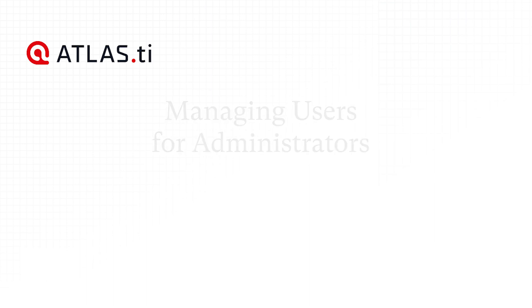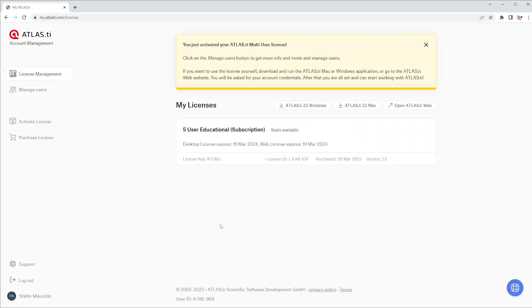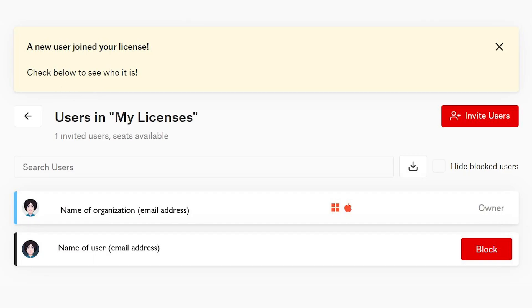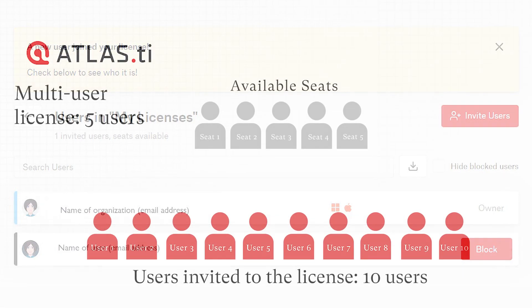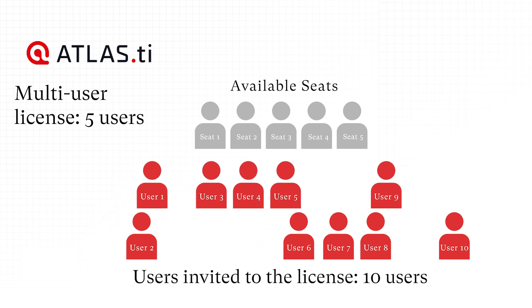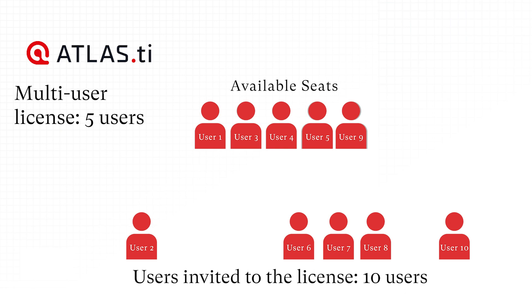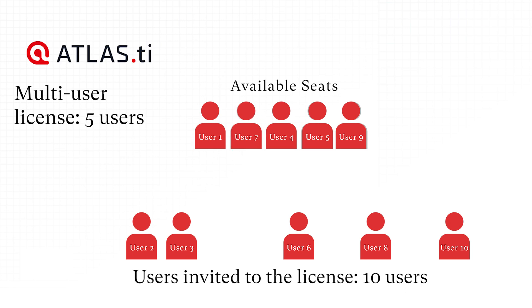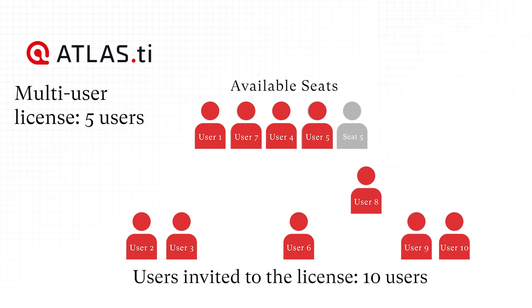Managing Users for Administrators. If someone misuses the license, or you no longer want a person to use the license, you can manually block a user in the organization's account. You can see which users are currently active and occupy a license seat. Usually, the user will occupy a license as long as their Atlas TI application is open. Once you have invited all the users, simply let Atlas TI do all the tedious work instead. Your license will be managed according to the number of seats. For example, with a 5-user license, since you can invite an unlimited number of users, if you have invited a total of 10 people, only 5 of them will be able to occupy the 5 available seats. However, when a user logs out of Atlas TI, one of the seats is then released, allowing other users to occupy and utilize that seat.